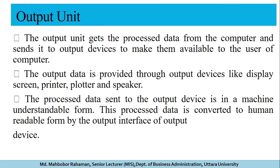The output unit gets the processed data from the computer and sends it to output devices to make it available to the user. Output is provided through devices like the display screen, printout from a printer, large-volume print from a plotter, or sound from a speaker. The processed data is in machine-readable form and is converted to human-readable form by the output interface of the computer device.